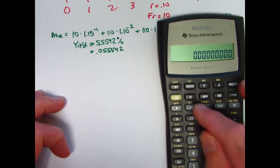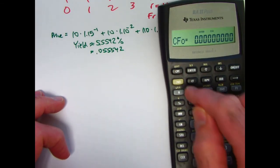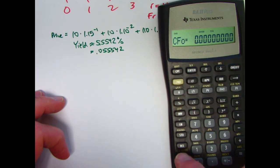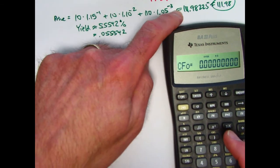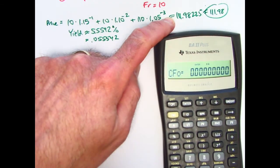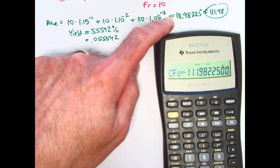So clear it out, press CF. If you need to, you can clear the worksheet. It looks like I don't need to, but I press second and then clear work down here. All right. Plug in the same numbers. CF0 is going to be the price with a negative sign, 111.98225, negative. Enter that.